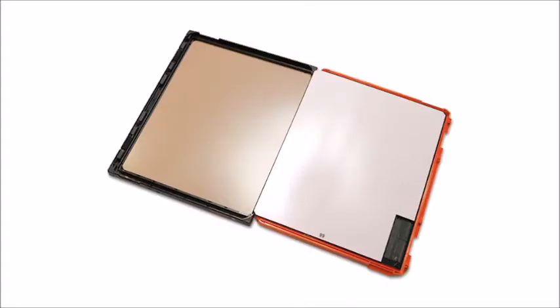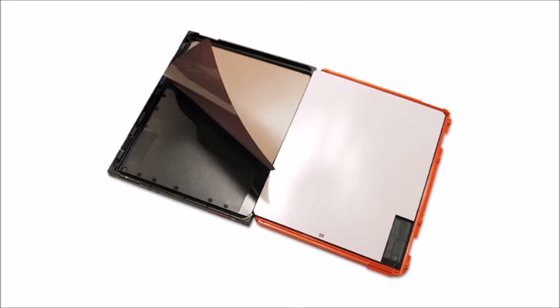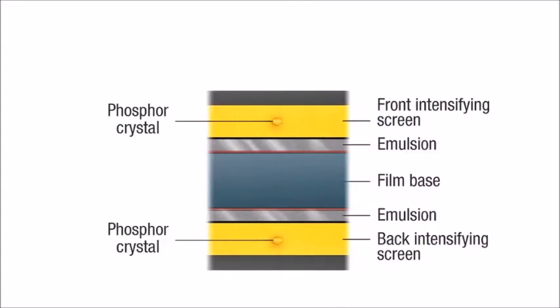The cassette in which film is placed is a shallow box lined with layers of felt or padding to press the film against the intensifying screens. Most cassettes have two intensifying screens. The film is placed between the two intensifying screens with the phosphor layer of each screen facing inwards in contact with the emulsion of the film.